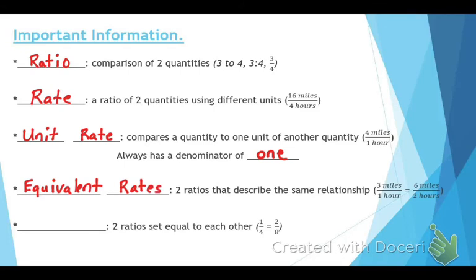The last vocabulary term is two ratios that are set equal to each other. You've learned three different ways to solve these: mental math, multiplication, or cross products. That is called a proportion. On your quiz and test next week, you'll need to know the difference between all these terms.